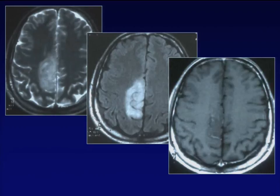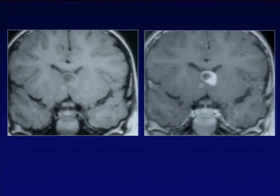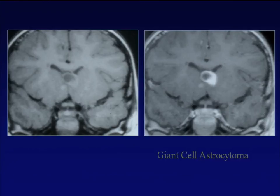Another very characteristic imaging feature is location. On pre- and post-contrast MRI coronal views, you see the lesion at the very specific position of the foramen of Monro — this is a case of subependymal giant cell astrocytoma (SEGA) in a patient with tuberous sclerosis.